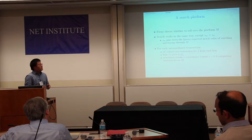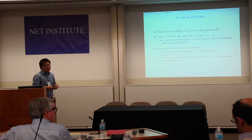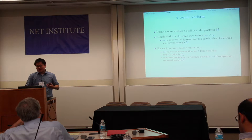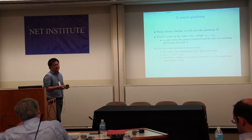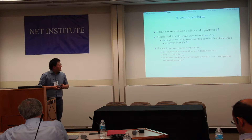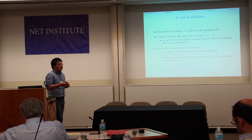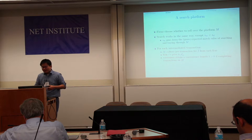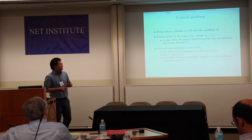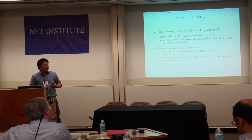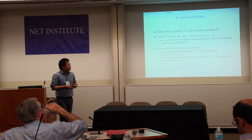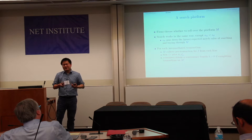There is another selling channel — the platform. Firms can choose whether to join it, and search works the same way as in the direct market, except the search cost on the platform S_M is assumed to be lower than S_D, meaning the expected match value is higher on the platform. For each transaction on the platform, M collects a per-transaction fee from the firm. Consumers obtain a convenience benefit B if they finish their transaction on the platform.